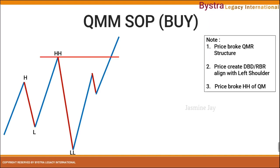Now let's look at the QM manipulation SOP for a buy setup. Same structure: high, low, higher high, lower low. Price has broken the QMR structure and created an entry point — the rally base rally — for the buy setup. At the same time, price has broken the higher high of the QM head. With these three conditions met, we can identify this as a potential QM manipulation for a buy setup.